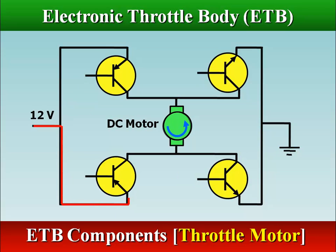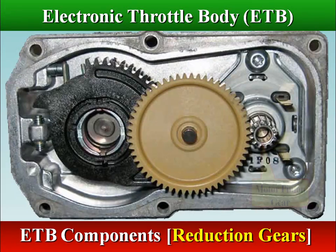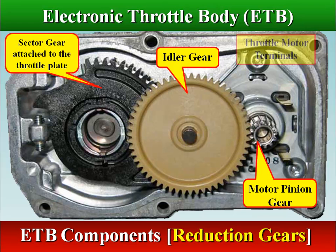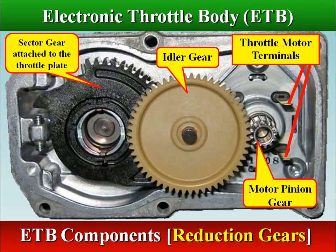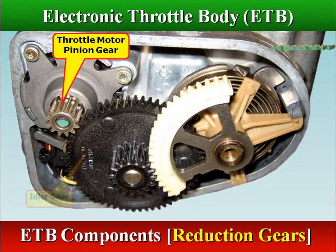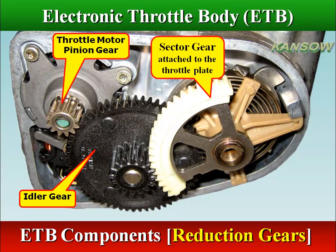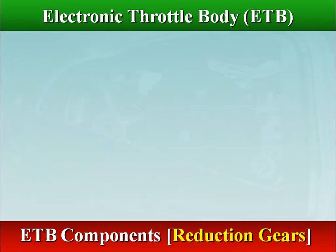To reverse the direction of operation, the polarity of the current through the motor is reversed. The throttle motor is mechanically coupled to the throttle valve through a gear train and controls the throttle valve angle. The gear train, or reduction gears, is used to multiply the torque of the DC motor. The throttle motor pinion gear drives a larger plastic idler gear, which then drives the small gear in mesh with the sector gear attached to the throttle plate, resulting in a huge torque increase from the small motor. The throttle plate is held in a default position by a spring inside.